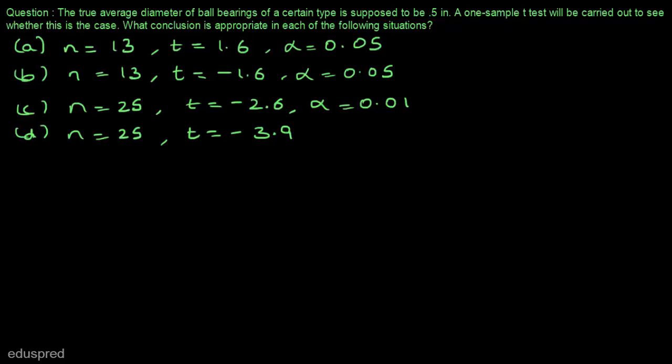In this video, I am going to solve this question. The true average diameter of ball bearings of a certain type is supposed to be 0.5 inches. A one-sample t-test will be carried out to see whether this is the case. What conclusion is appropriate in each of the following situations?